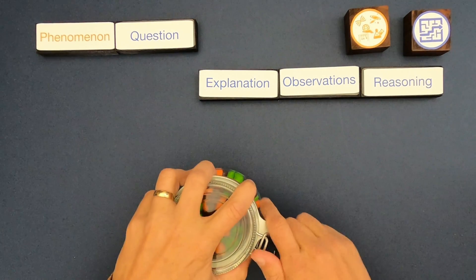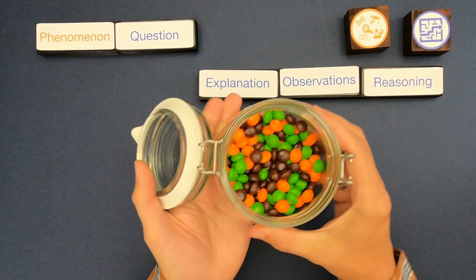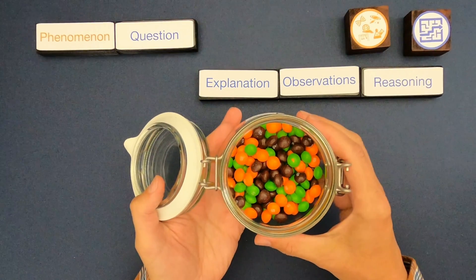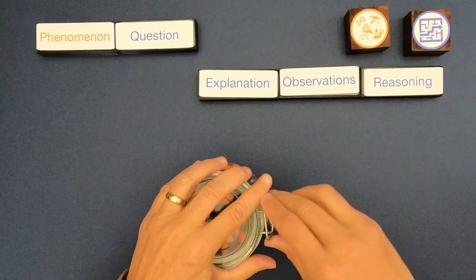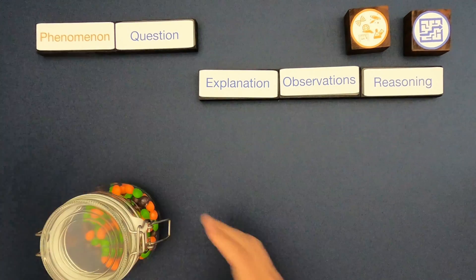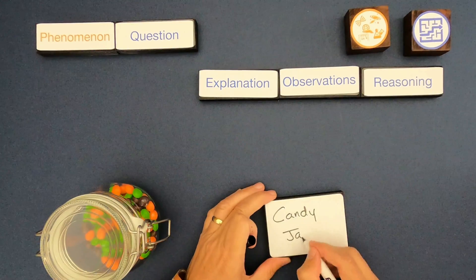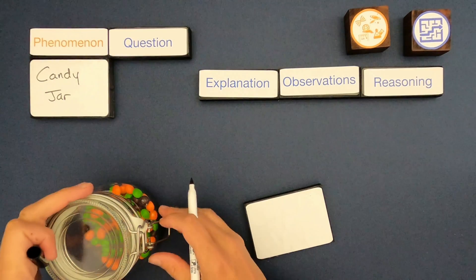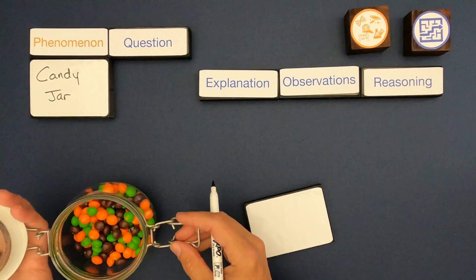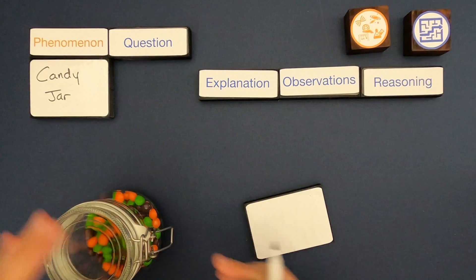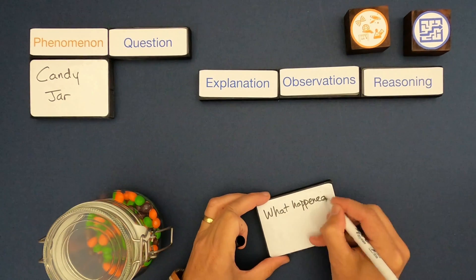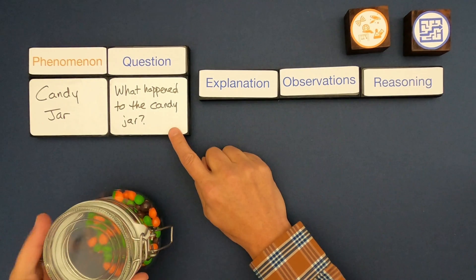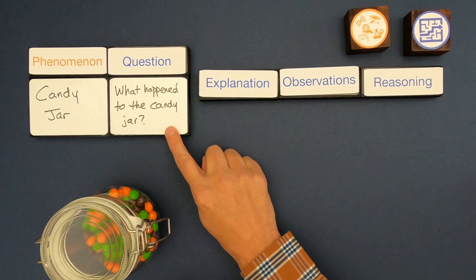The explanation we're going to try to figure out is what's going on with this candy jar. It has some Skittles in it with different colors — that's going to be our phenomena. I'm going to write the phenomena up here in the corner, and then we're going to write down the question. The question we're trying to answer is: what happened to the candy jar? The explanation is simply going to be an answer to that question.